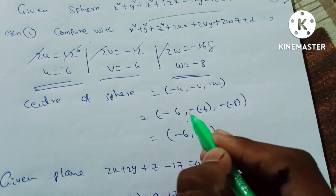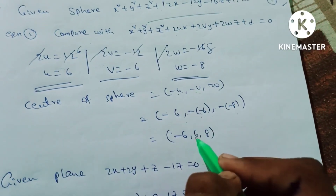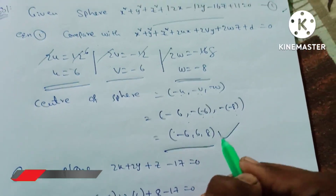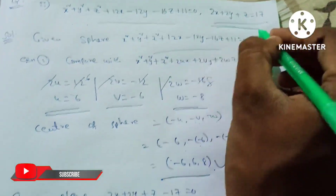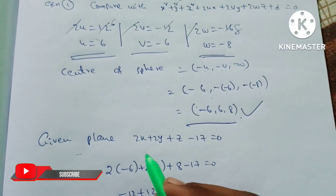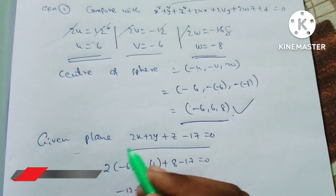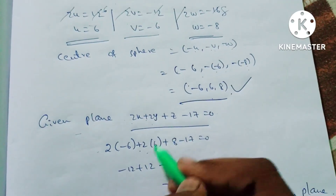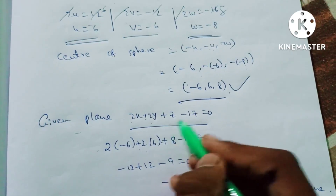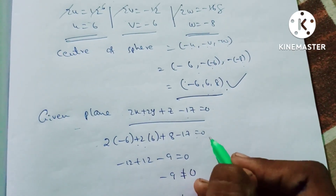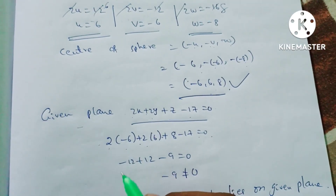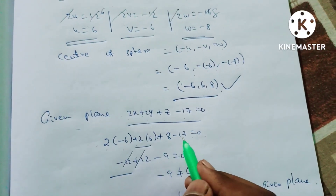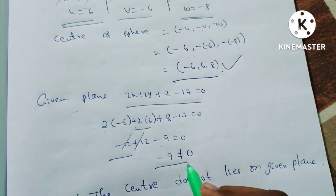Now we substitute the center (-6, 6, 8) into the given plane equation: 2×(-6) = -12, 2×6 = 12, these cancel. Then 8 - 17 = -9.